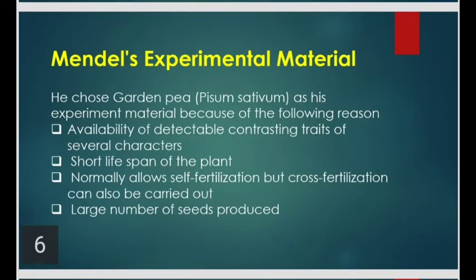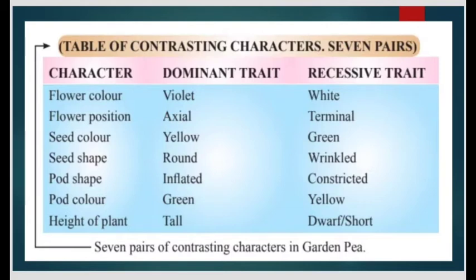Mendel's Experimental Material: Mendel selected garden pea, i.e., Pisum sativum, as his experimental material for the following reasons. First, availability of detectable contrasting traits of several characters. Second, short lifespan of the plant. Third, it normally allows self-fertilization but cross-pollination can also be carried out. And lastly, a large number of seeds are produced. Mendel studied seven pairs of contrasting characters in garden pea.